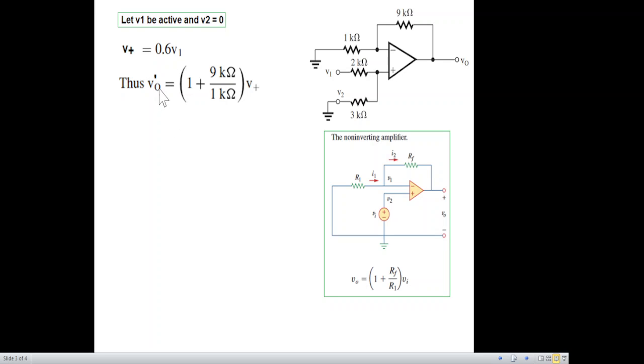For the first setting, that is when v1 is active. So it is 1 plus 9k over 1k multiplied by v_input. Now in our case, v_input is v_positive at this terminal, the voltage here. When you solve, you get 9 here, so 9 plus 1 is 10. V_positive is 0.6 v1. Multiplying this, output voltage will be 6 times v1. So this is the voltage when v1 is on.